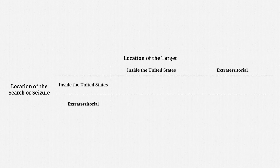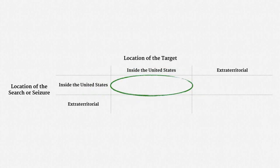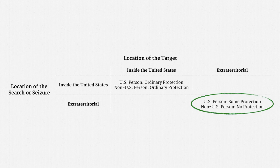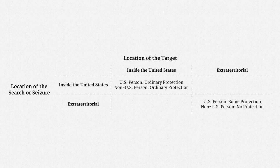To better reflect where the law is, here's a more precise grid. On one axis is the location of the search or seizure — that's where the data gets collected. On the other axis is the location of the target person. Either of these could be inside or outside the United States. As a recap: if both the data and the target are inside the United States, then the ordinary Fourth Amendment rules apply, and a person's citizenship is irrelevant. Where both the data and the person are outside the United States, U.S. persons get some form of reasonableness protection, and non-U.S. persons get no protection.